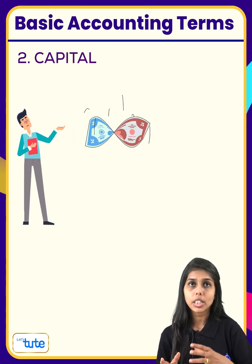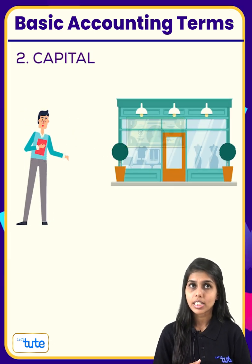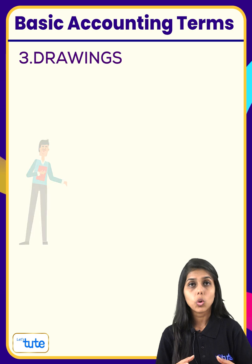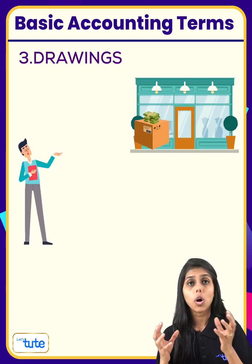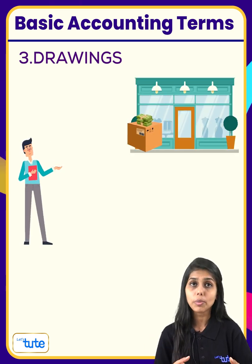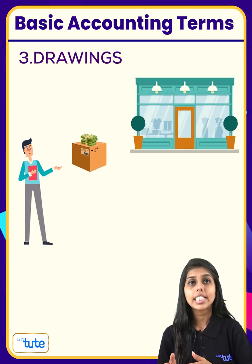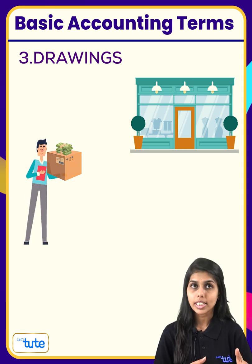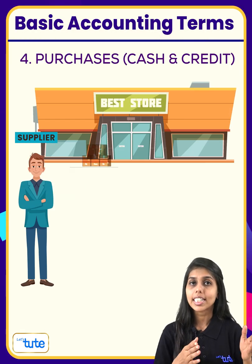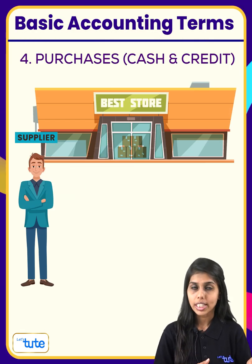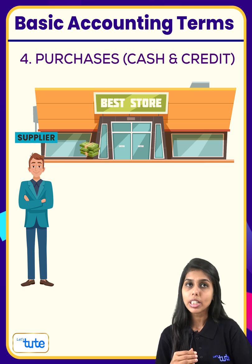When the owner withdraws goods or money from the business for personal use, it is known as drawings. When goods are bought, it is accounted as purchases. If immediate payment is made, it is known as cash purchases.